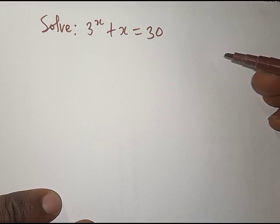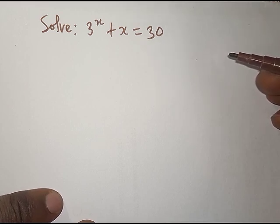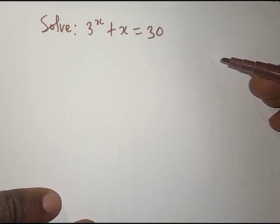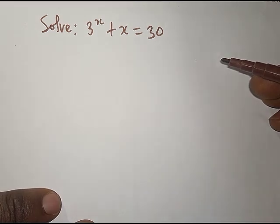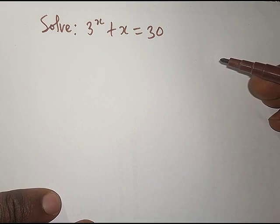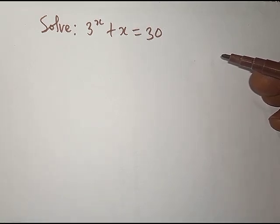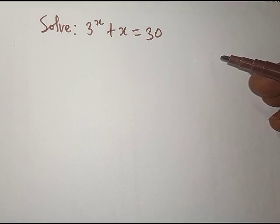By inspection, we can see that if we replace x by 3, the value x equals 3 satisfies this equation: 3 to the power 3 gives 27, plus 3 gives 30. In this tutorial we are going to look at how we can solve that algebraically, so stay focused.